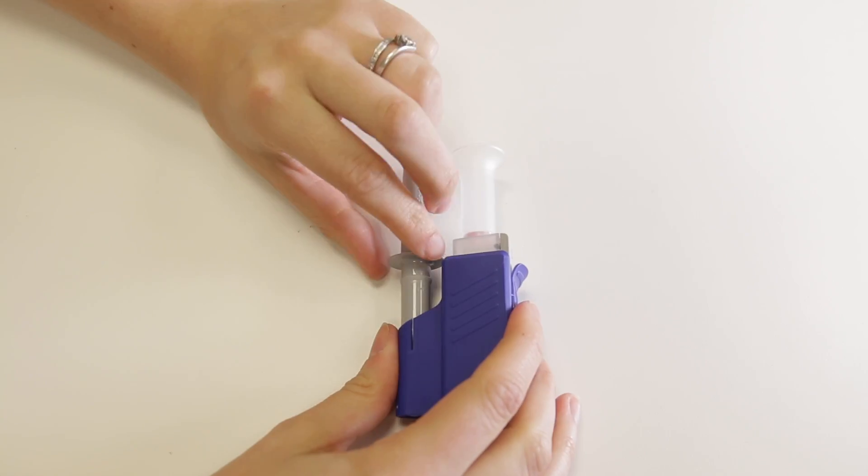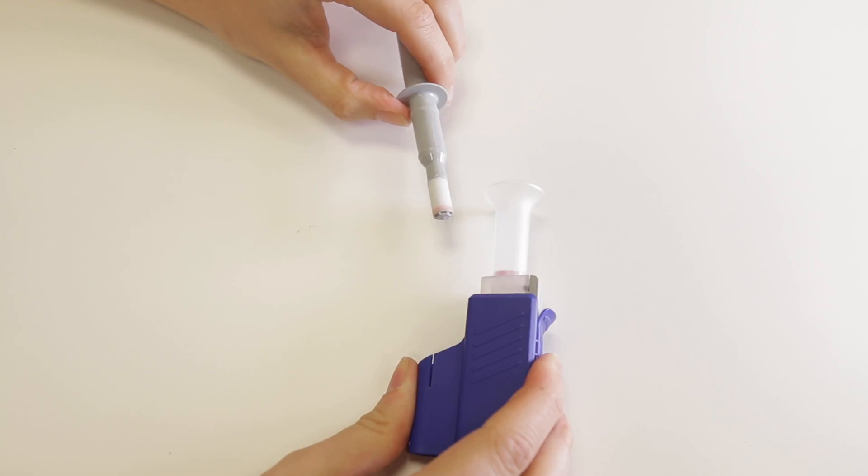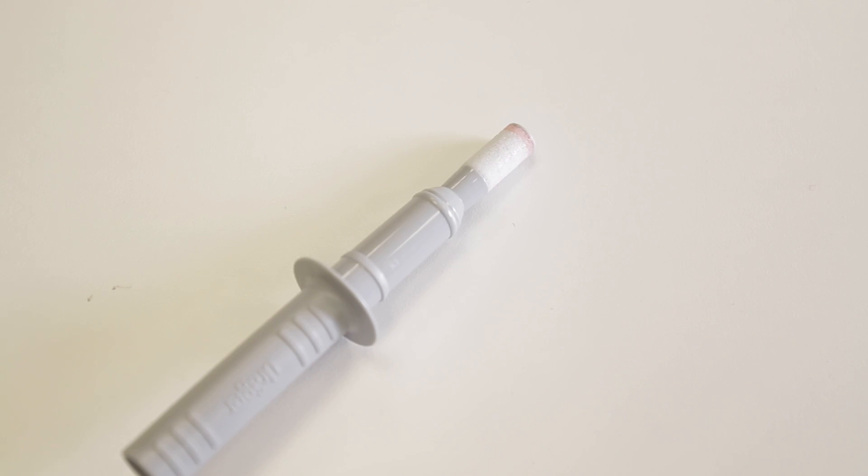Now remove the sampler from the cassette and you'll notice a colored ring around the sampler, which will be used to indicate that a sample has been taken.